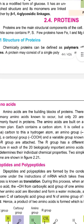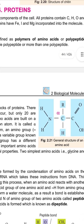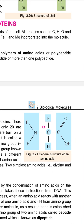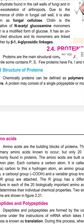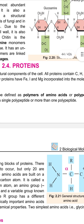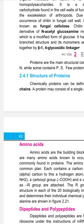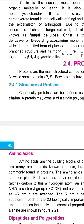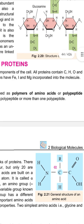Proteins are the main structural components of all the cells. All proteins contain carbon, hydrogen, oxygen and nitrogen. While some contain phosphorus and sulfur. Few proteins have iron, iodine and magnesium incorporated into their molecules.